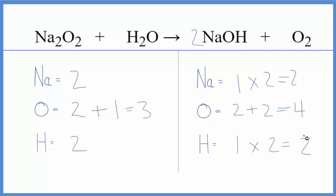So now we have a bit of a problem. We're close. We have four oxygen atoms on the products, three on the reactants. We could put a two here, but that would double the oxygen, so we'd have an extra oxygen.